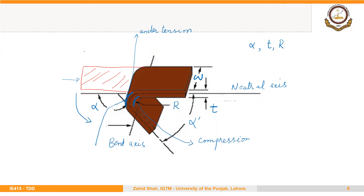Another important factor is how much the length of the starting blank should be. The starting blank is a straight flat piece of sheet that will be bent to angle alpha with radius r, so we need to determine the correct starting blank length to achieve the required dimensions after bending. To do this, we convert the arc radius to a straight length — this is called bend allowance — and we will see how to calculate it in a following segment.